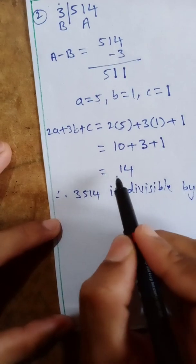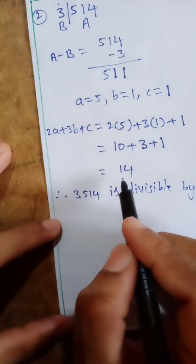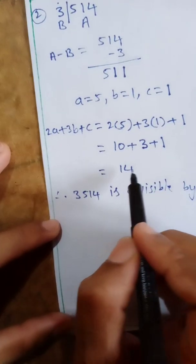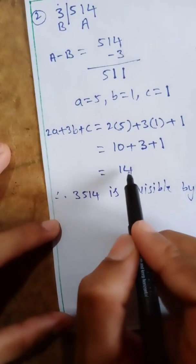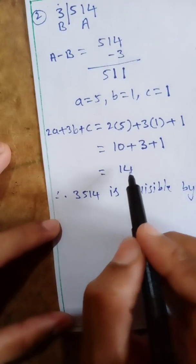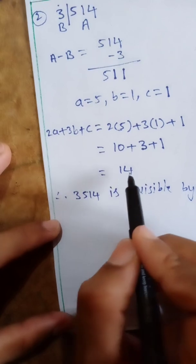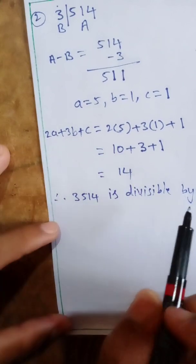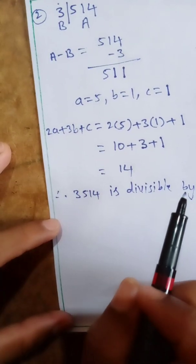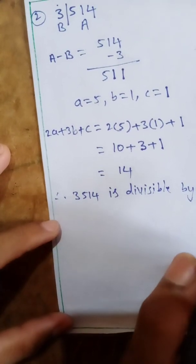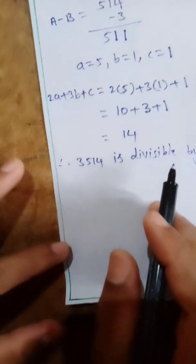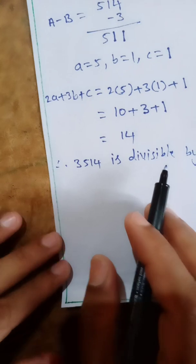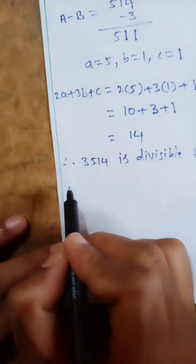Suppose the result had been 15 instead of 14 — 15 does not appear in the 7 times table, so the given number would not be divisible by 7. Let's take another example to illustrate.